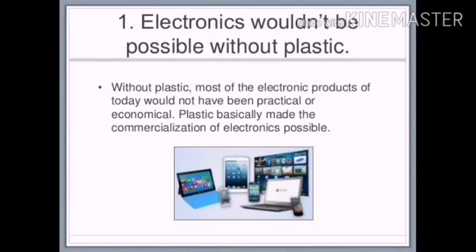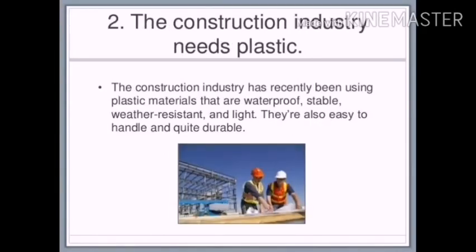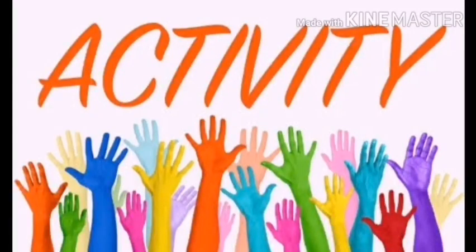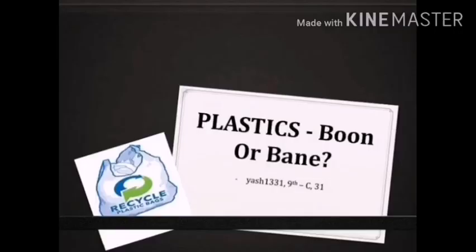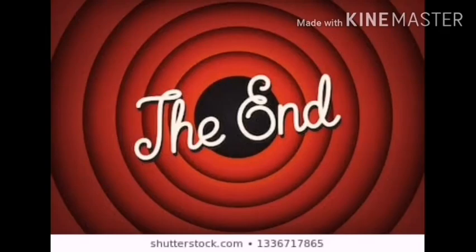Electronics would not be possible without plastic. Without plastic, most electronic products would not have been practical or economical — plastic basically made the commercialization of electronics possible. In the construction industry, plastic materials that are waterproof, stable, weather resistant, light, easy to handle, and quite durable are being used. Activity: you will have to make a poster on the topic 'Plastics: Boon or Bane' — meaning is plastic good or bad for us? Share your thoughts in a drawing or on a piece of paper.